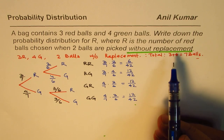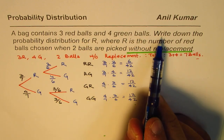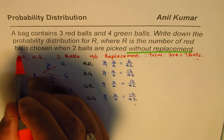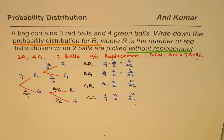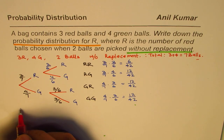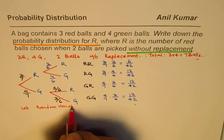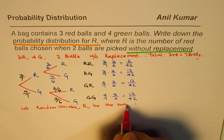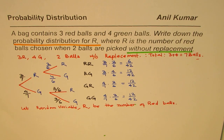Now let's read the question once again. A bag contains three red balls and four green balls — write down the probability distribution for R, where R is the number of red balls chosen. Let us define the random variable R as the number of red balls.